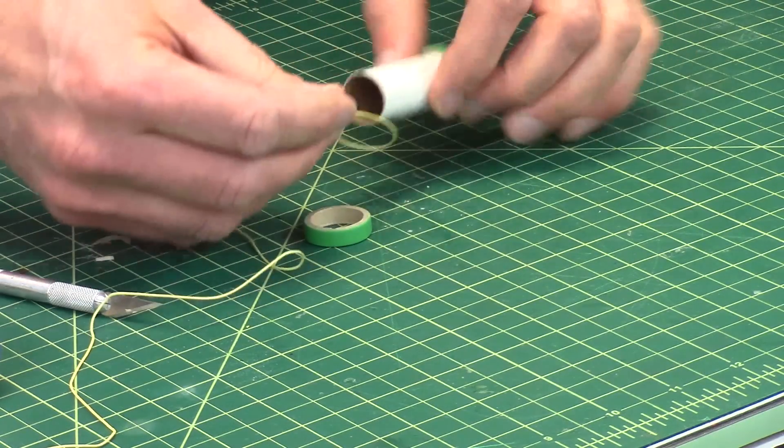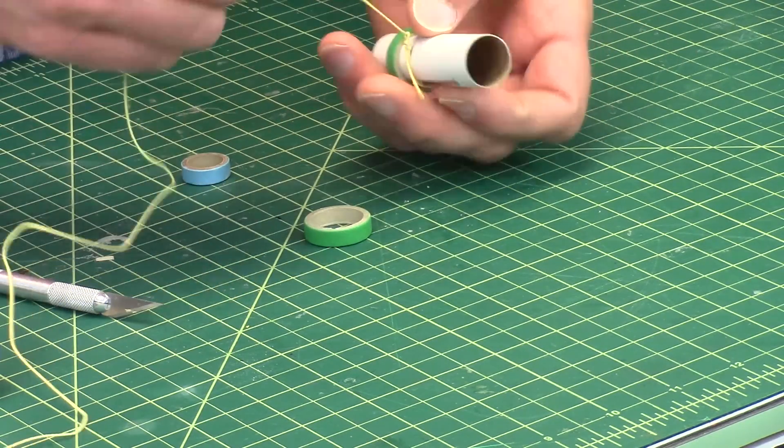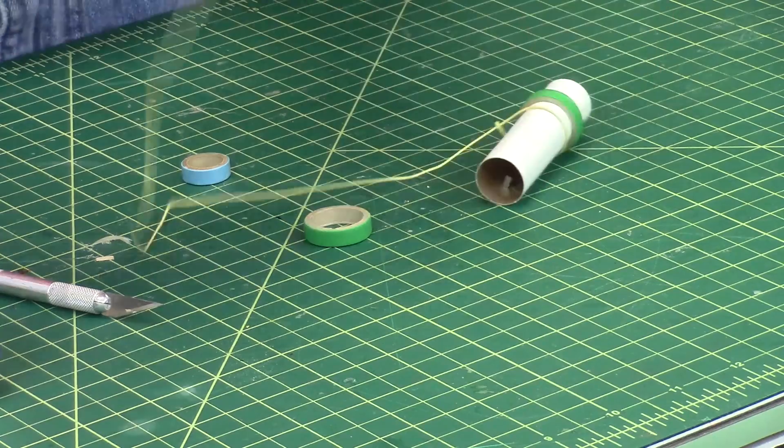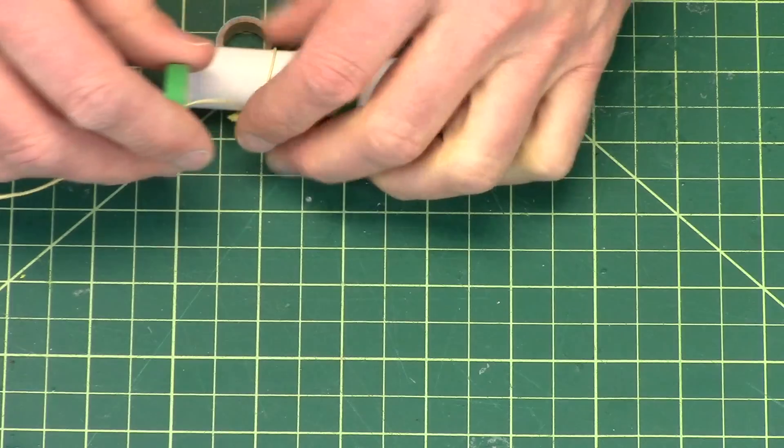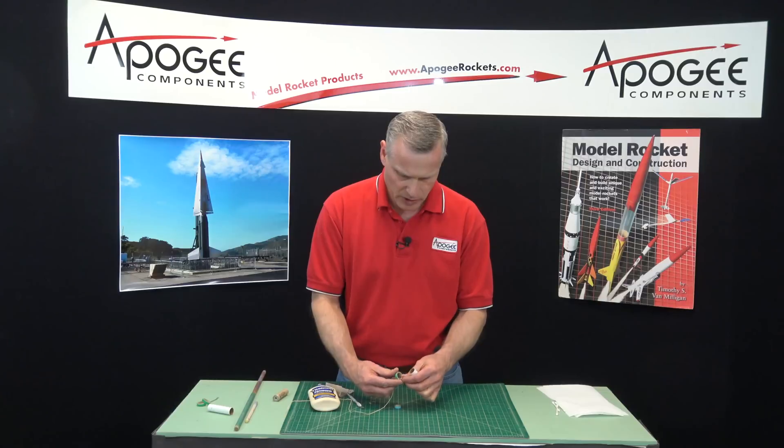Now I know some people don't like to get their fingers wet. So just wear some rubber gloves. That will work. Oh look, that thing came off. If it comes off, just put it back on. Put the shock cord through the ring. Get it into my groove.